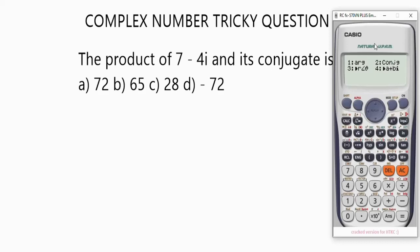We want conjugate of complex numbers, which is option two. If you want argument, it's option one. But what we need is conjugate, so press two. The conjugate of what? Conjugate of 7 minus 4i.